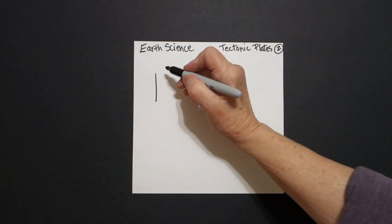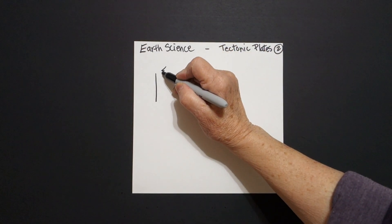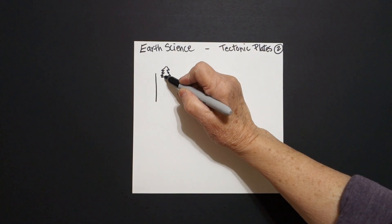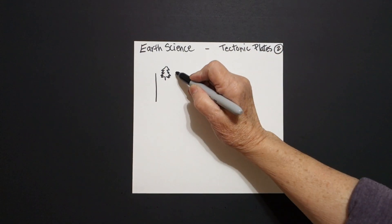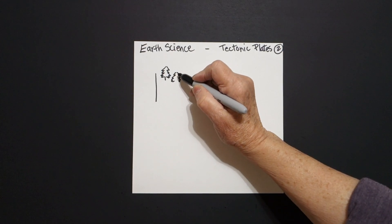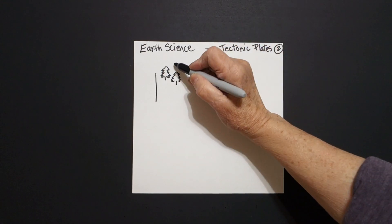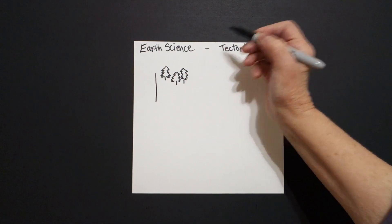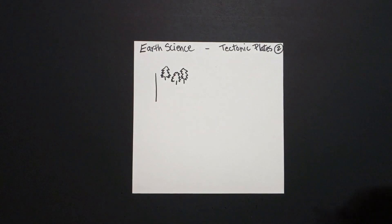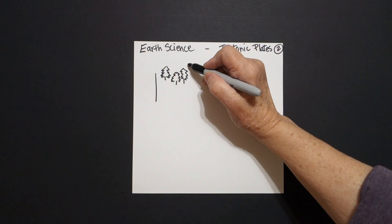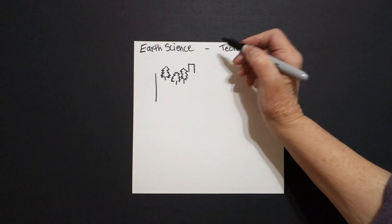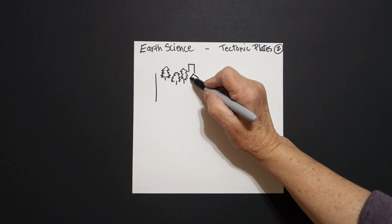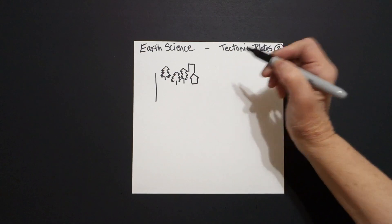We're going to come back in at the top and just go zigzag on the left, zigzag on the right, straight line. We're going to do a couple of those — zigzag, straight line, zigzag, straight line, connect. Now we're going to add straight lines, then draw straight diagonals, straight line, straight line, connect.